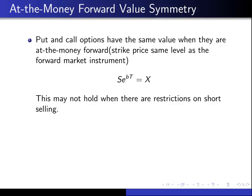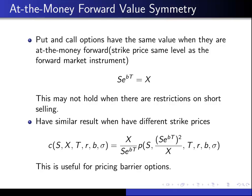We also have similar results when we have different strike prices. The CALL price for a given share price, strike price and so on, is equal to X over S times e to the BT, times a PUT option, where we replace the strike price X by S times e to the BT squared over X. This is handy when we're pricing barrier options, for example.